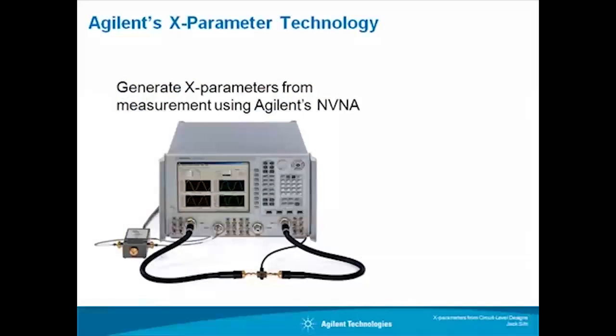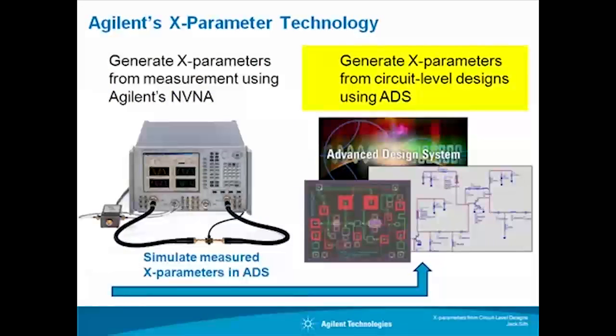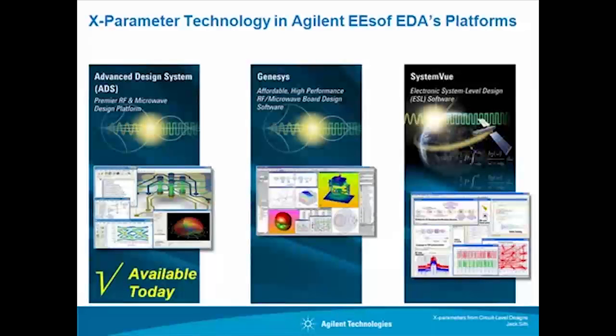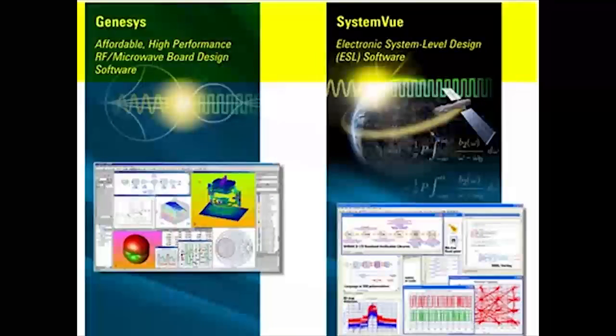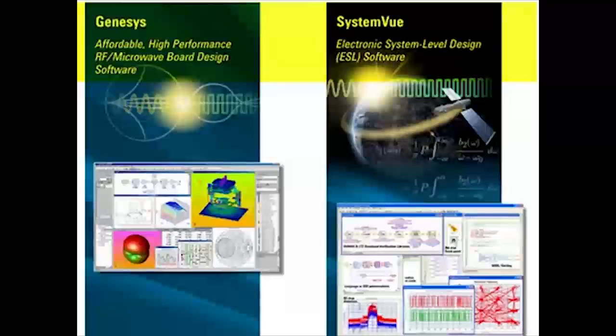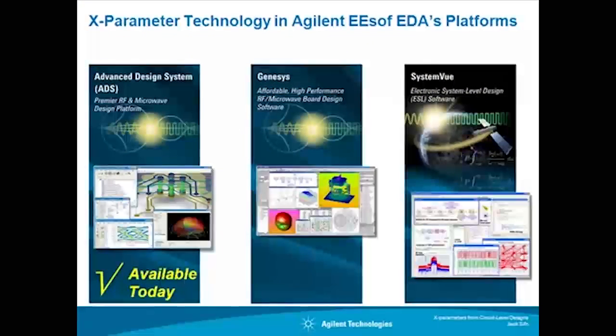So, we see that Agilent delivers the benefits of X parameter technology in many ways. Through measuring X parameters with the Agilent NVNA. Through simulating and generating X parameter models from circuit level designs in ADS. And, in the future, we will be bringing X parameter technology to Agilent ESOF EDA's Genesis and System View platforms.